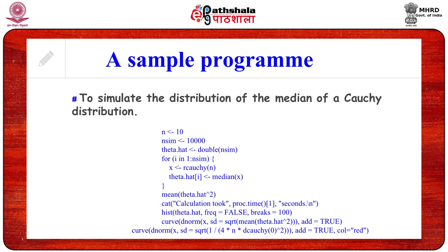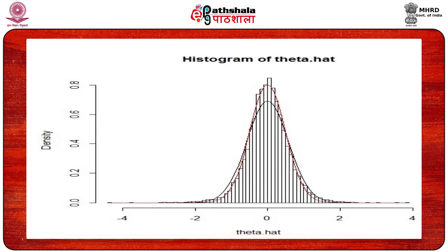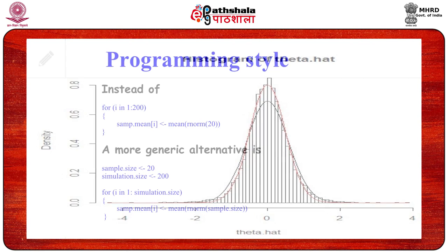Now let's see how programming in R actually works. The problem here is to find the distribution of the median of the Cauchy distribution. We know that the mean of the Cauchy distribution does not exist, so the median is used as a measure of central tendency. Here we are simulating 10,000 samples each of size 10, then calculating the median for each sample. The histogram gives us the distribution of the sample median.